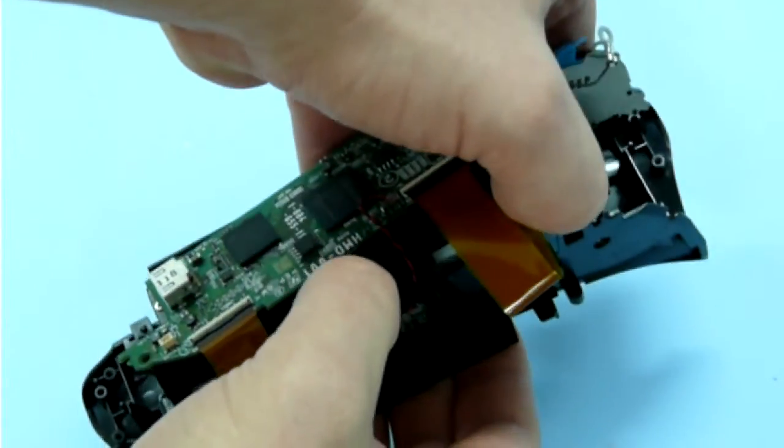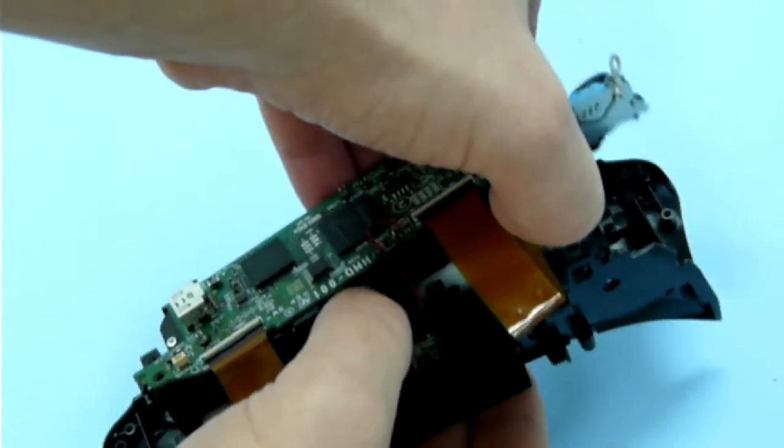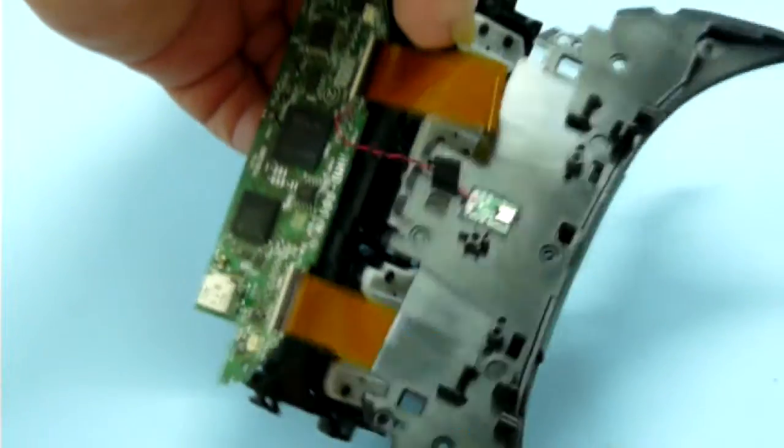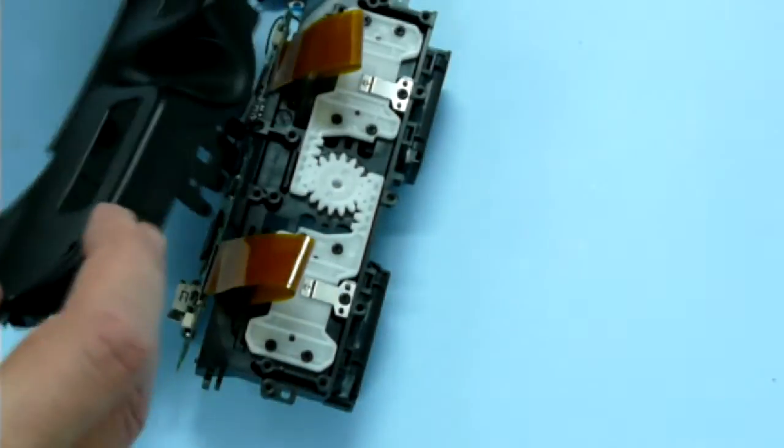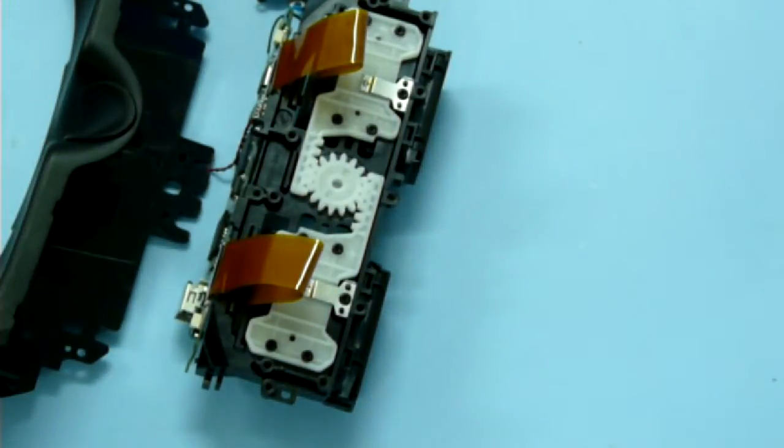Now gently pull one part against the other. Here is our sprocket.